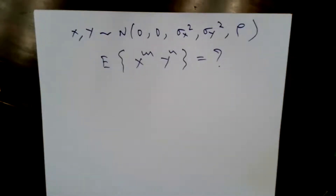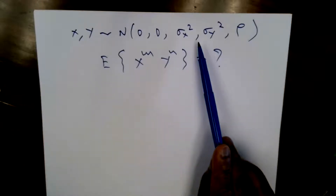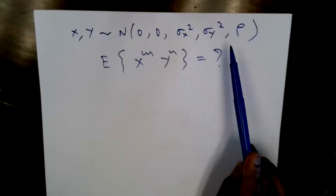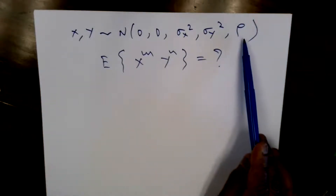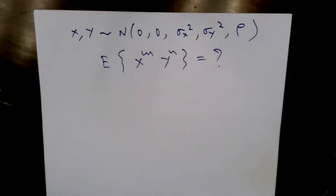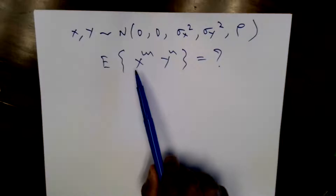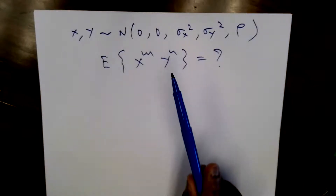Let's look at this problem. x and y are jointly Gaussian random variables with zero mean, different variances σx² and σy², and correlation coefficient ρ. So they are dependent random variables. The problem is to find the joint moments of x to the power m, y to the power n.